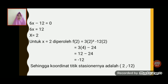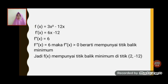x sama dengan 2. Untuk x sama dengan 2 dimasukkan ke fungsi awal, berarti ketemu 3 kali 2² dikurangi 12 kali 2, sama dengan 3 kali 4 dikurangi 24, sama dengan 12 kurangi 24, sama dengan negatif 12. Sehingga koordinat titik stasionernya adalah (2, -12). Turunan keduanya adalah 6, maka lebih besar dari 0. Berarti mempunyai titik balik minimum. Jadi fungsi f(x) mempunyai titik balik minimum di titik (2, -12).